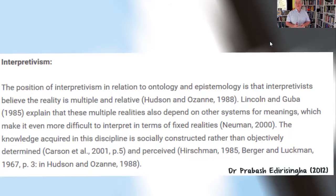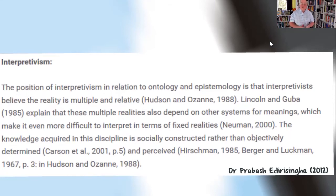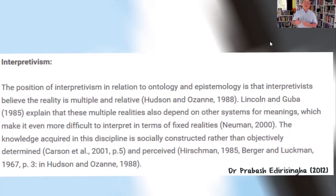Lincoln and Guba are two really famous research authors. When you're looking at research methods books, you'll find a lot written by these two, and they are seen as foundational. Lincoln and Guba explain that these multiple realities also depend on other systems of meaning, which makes it more difficult to interpret in terms of fixed realities. So even from the point of view of gender differences, for example, people of different genders may perceive the same reality, but in very different ways.